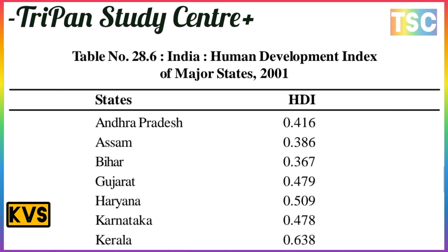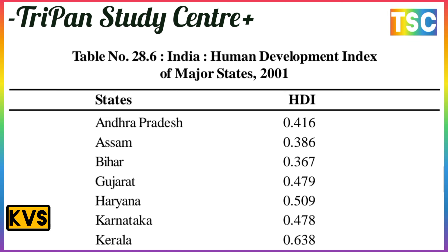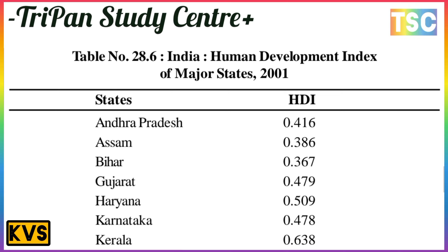The HDI value for Odisha is 0.416, which is a very low condition. Assam is 0.386, also very low. Bihar is 0.367, which is very low. Gujarat is 0.479, Haryana is 0.509, Karnataka is 0.478, and Kerala is the maximum at 0.638.